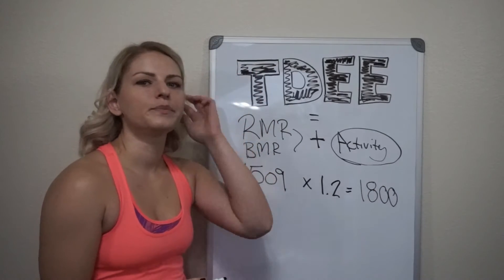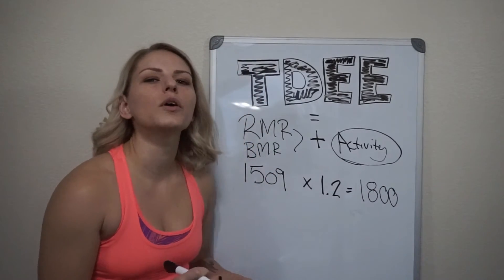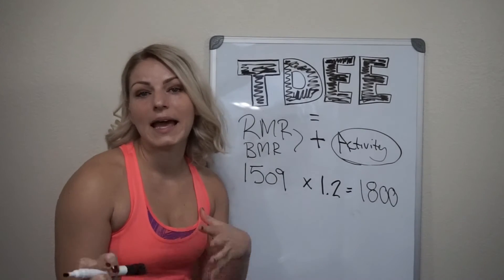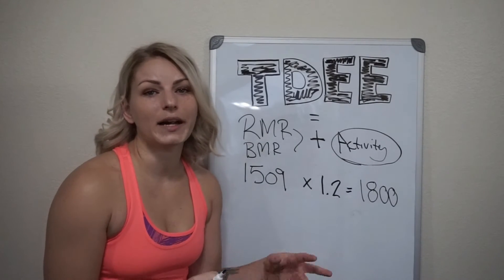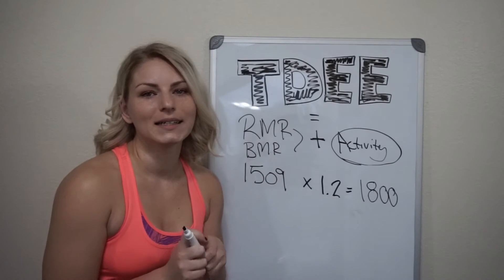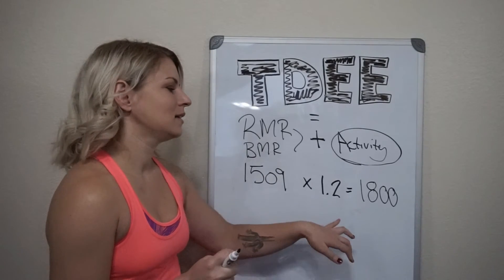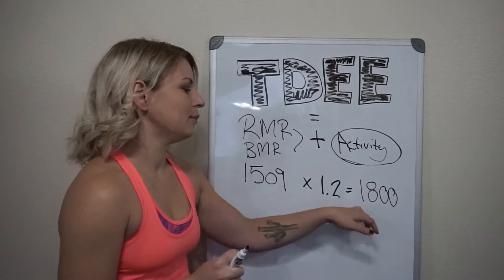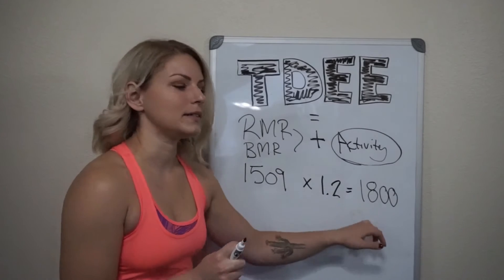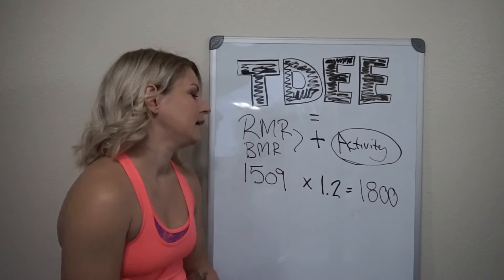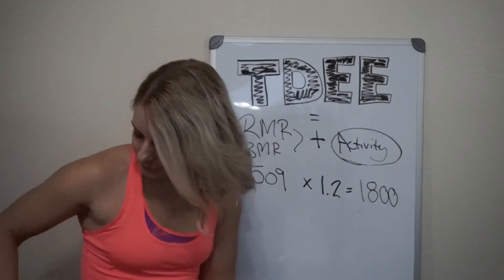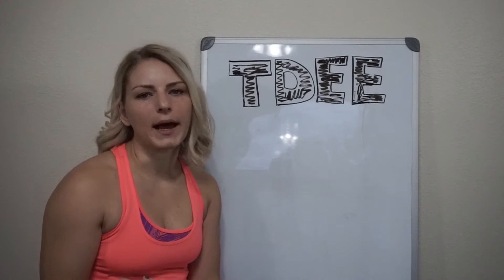That gives me my TDEE of about 1,800 calories. So before, when I was thinking that if I ate 600 calories and burned 800 I would be negative 200, that's not the case — because I was actually burning a lot more than 800 calories that day.